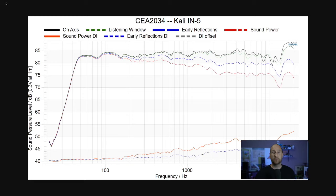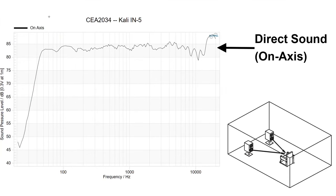Like the previous graphic, this has a bunch of different lines on it, so I'm going to step through what each one of these lines means. The first line you need to pay attention to is the on-axis response, shown here in black. This is what I talked about in part one of this series.